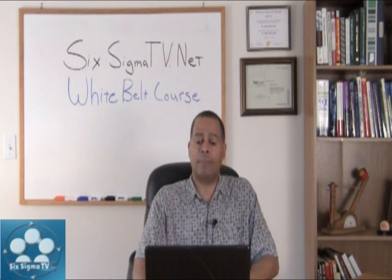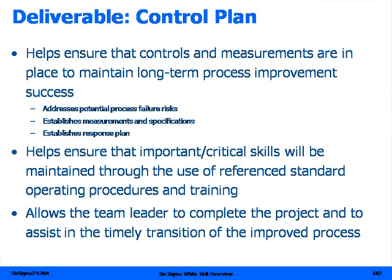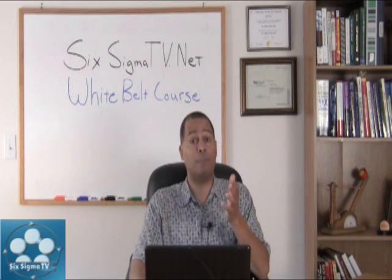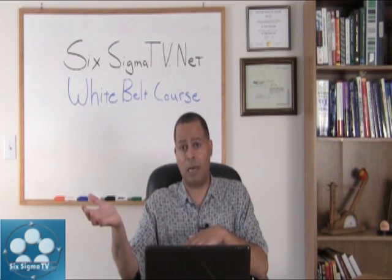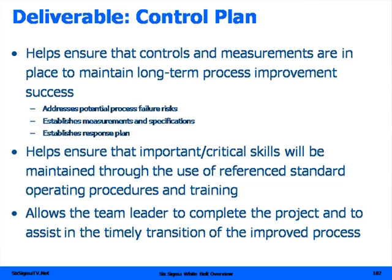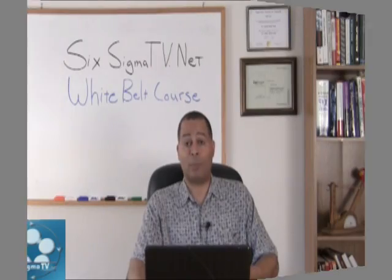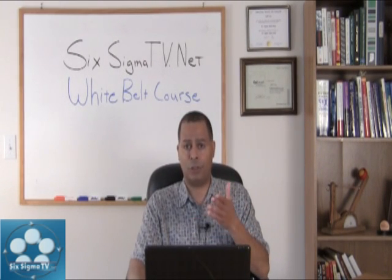You're going to control the process, look at the benefits, and then implement that new process. The deliverables of the control plan: it helps ensure that controls and measurements are in place to maintain the long-term process improvement, it addresses any potential failures, your measurements and specifications that you're going to monitor, and establishes a response plan in case your process starts to stray again. It helps ensure that critical skills will be maintained through the use of your standard referencing and operating procedures, and allows team leaders to complete the project and assist in a timely transition of the improved process. We have that template up at the website, SixSigmaTV.net — you can pull those down to use in your projects.